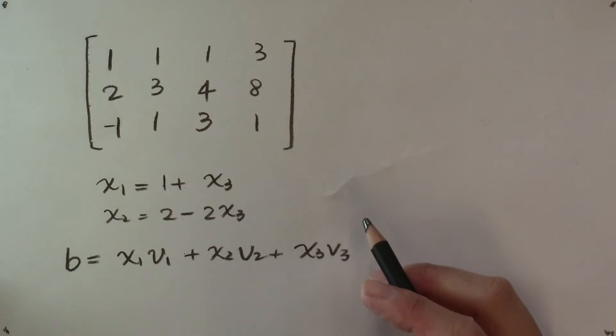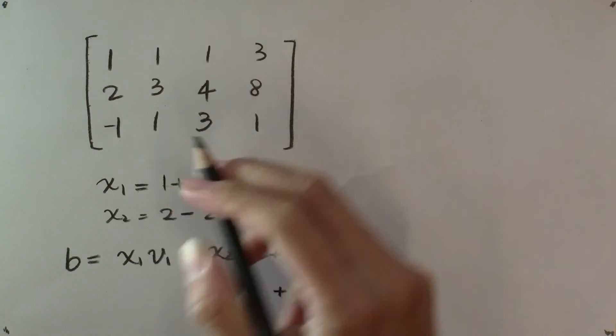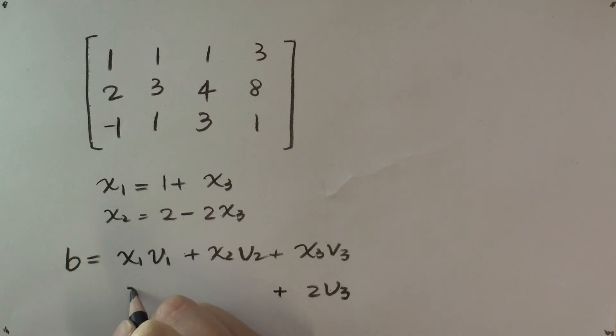if we pick x₃ = 2, then x₁ = 3 and x₂ = -2.